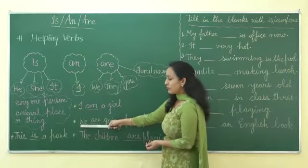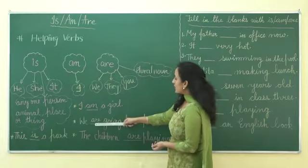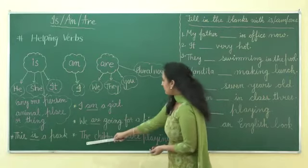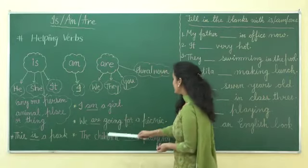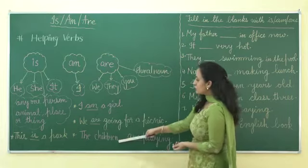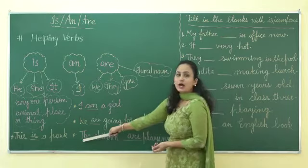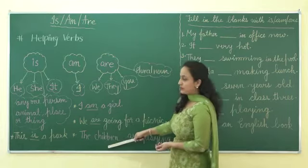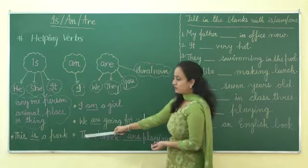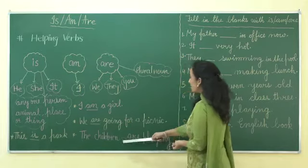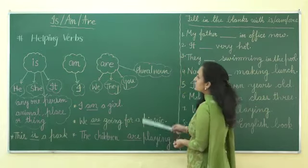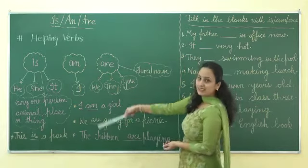For example: 'We are going for a picnic.' 'We' is a plural pronoun so we can use 'are' with it. 'The children are playing.' 'The children' means a number of children, not one child, so we can use 'are' with them. I hope this is clear to you.